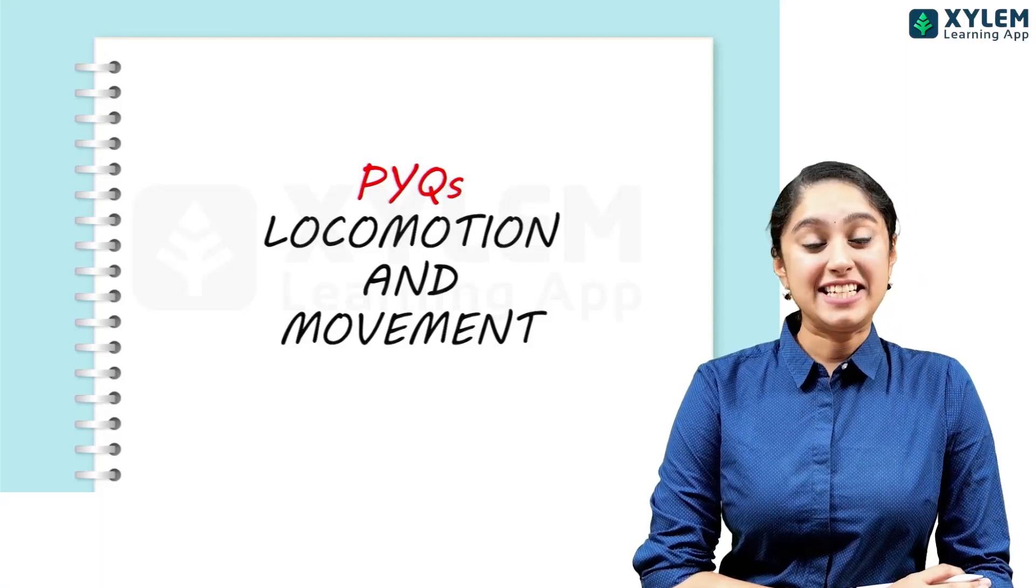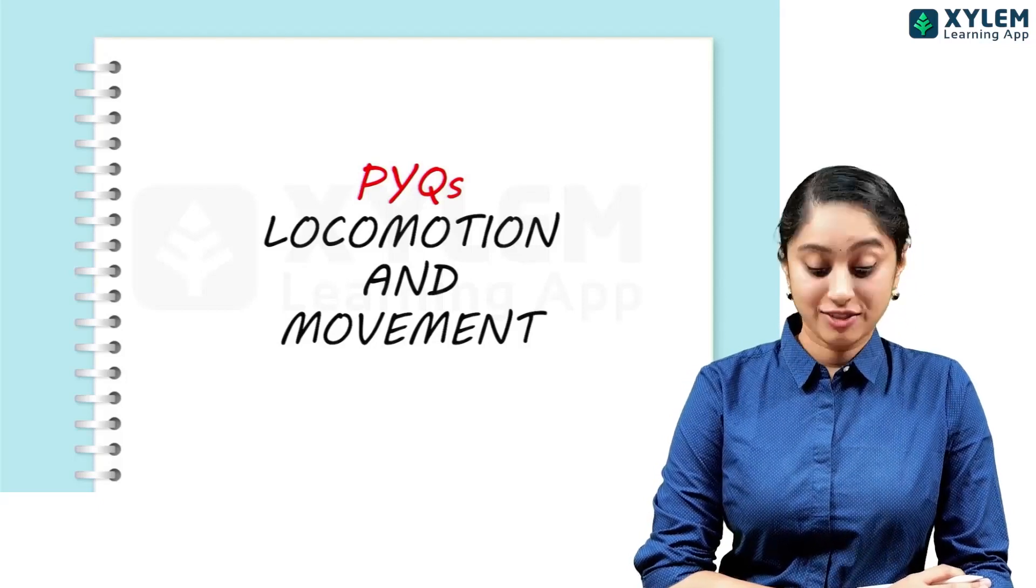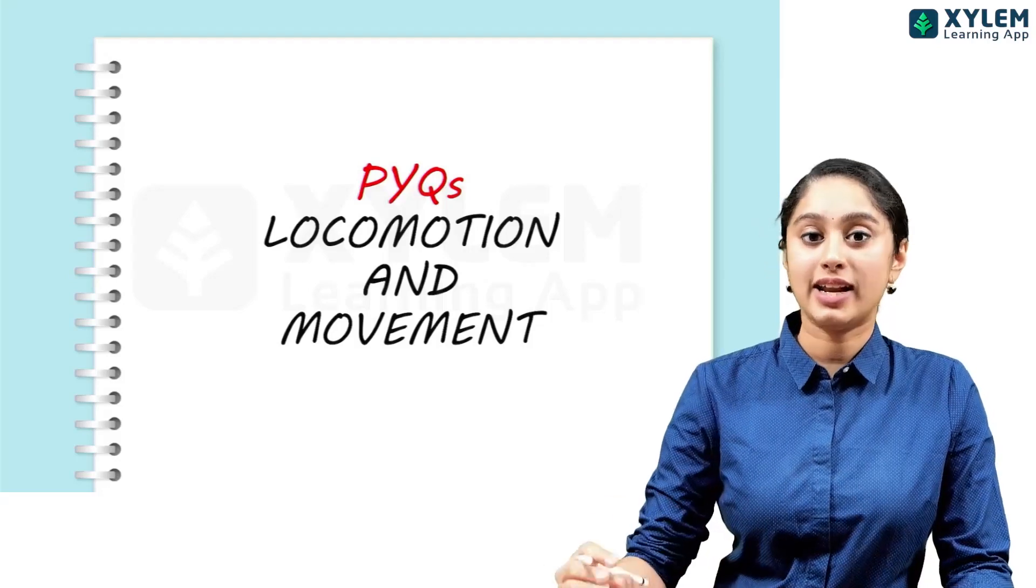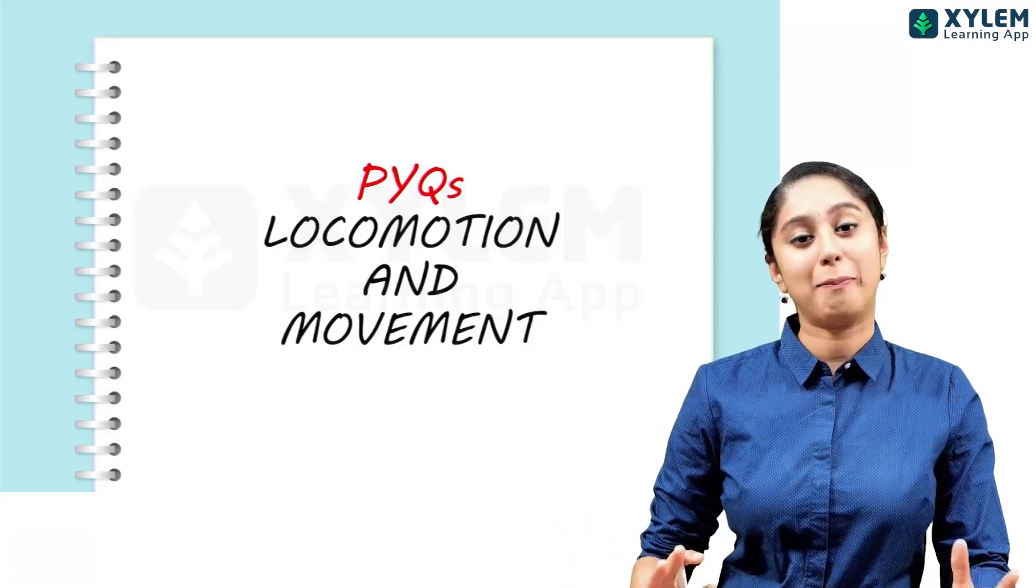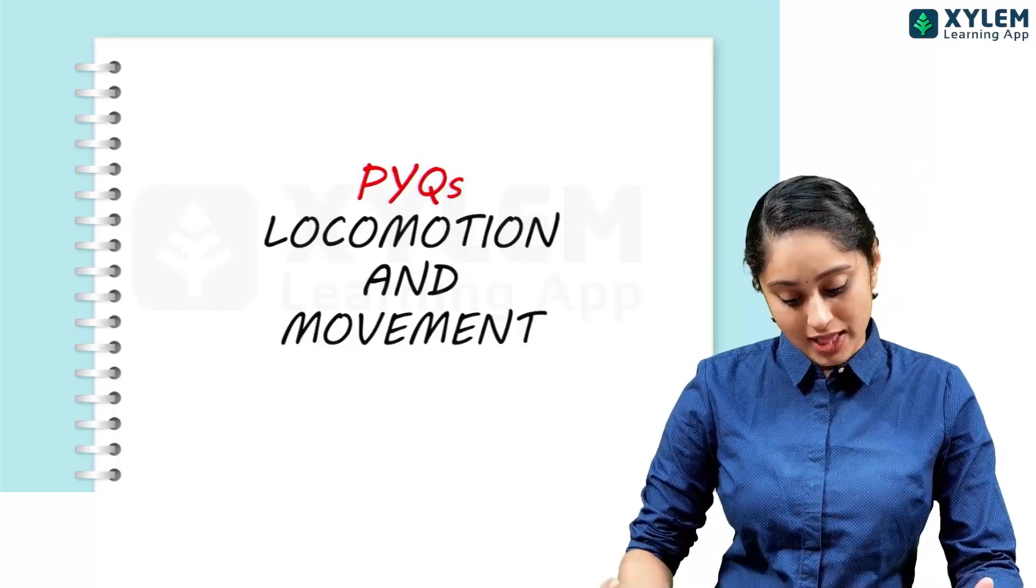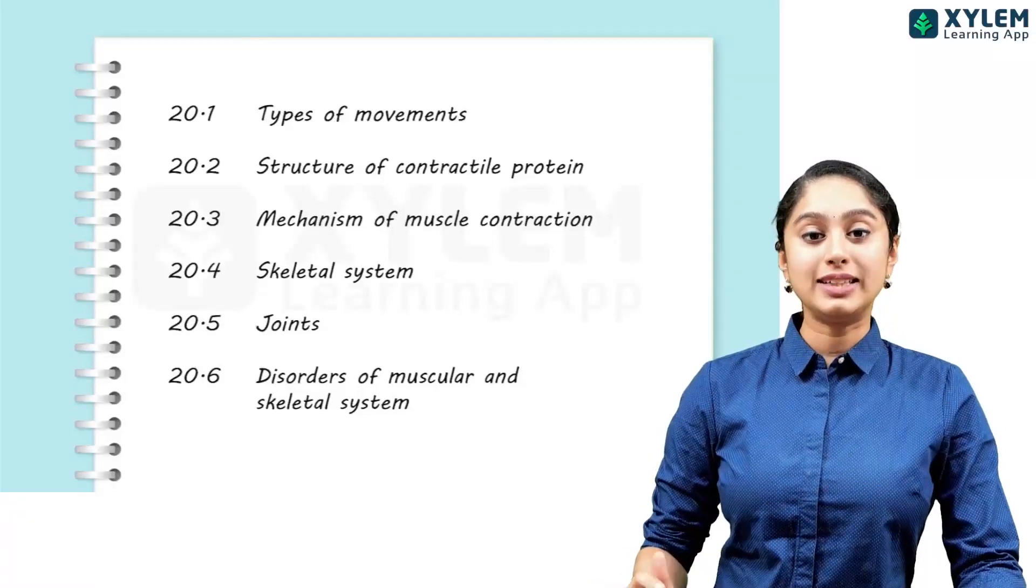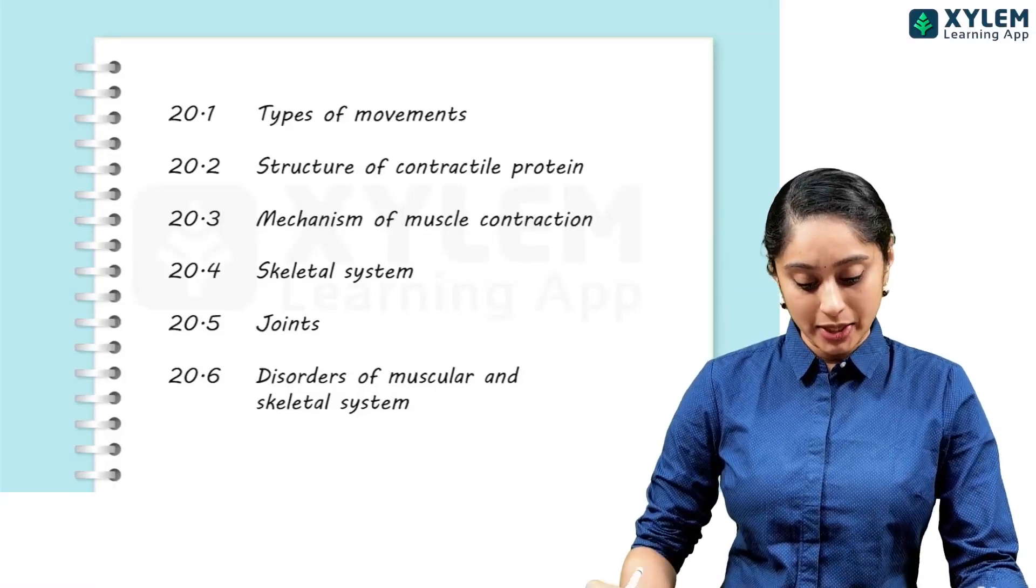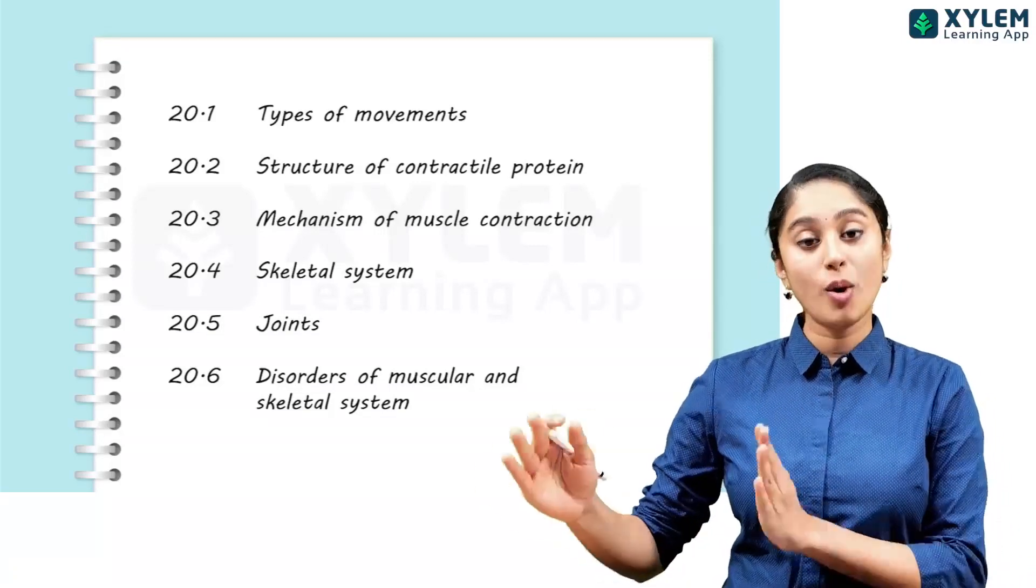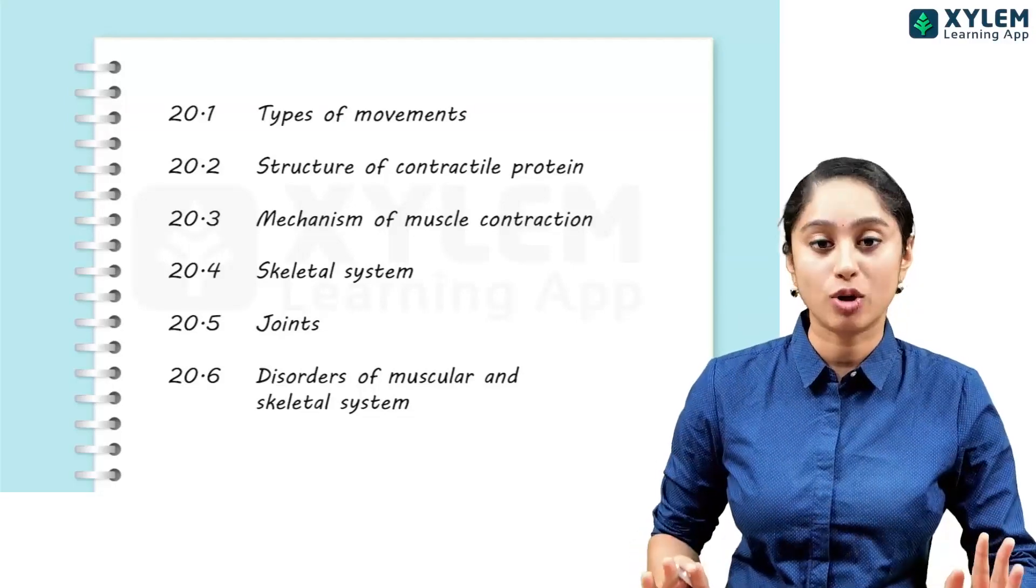Hello students, human physiology is very important in this chapter, one of the chapters is locomotion and movement. In this chapter, there are very simple direct questions, very application-oriented questions. So we will discuss all of the PYQs here. In this chapter, there are types of movements, structure of the contractile protein, mechanism of contraction, and then going to skeletal system, joints and disorders. This is the structure of the chapter.